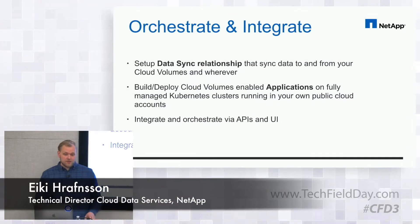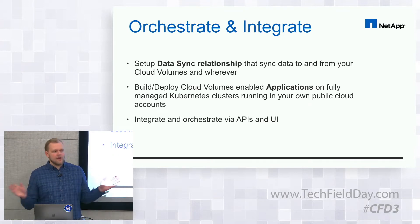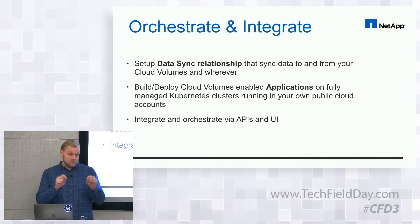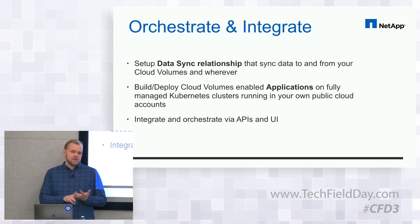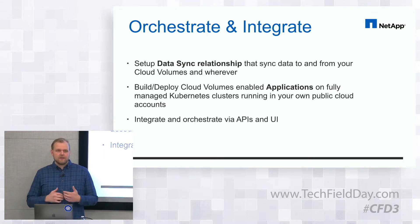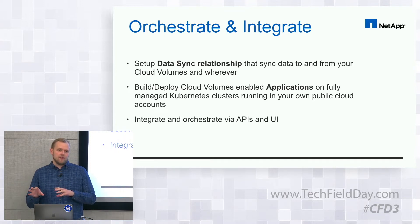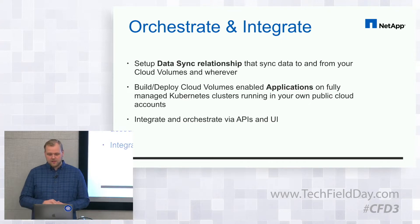So three things — orchestrating and integrating. We went with an open API approach, so we have an API for everything: not just this, but also for Cloud Sync, Cloud Central so you can manage user stuff, for SaaS Backup, and eventually for AltaVault as a service, which we're calling Cloud Backup. That takes care of the developer-centric or automation operations engineers who want to tie this into their own tools and dashboards.